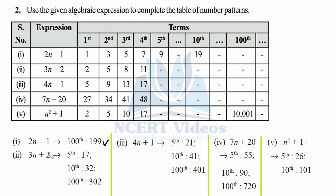For the second expression 3n + 2, we need to find the 5th, 10th, and 100th terms. For the 5th term, put n = 5: 3×5 + 2 = 17. For the 10th term: 3×10 + 2 = 32. For the 100th term: 3×100 + 2 = 302.